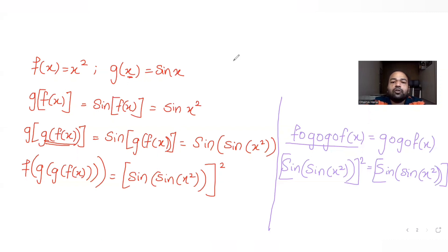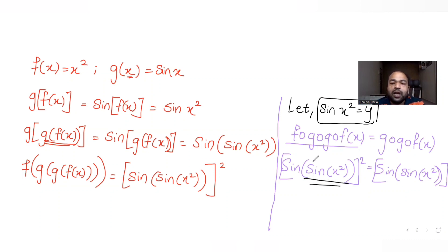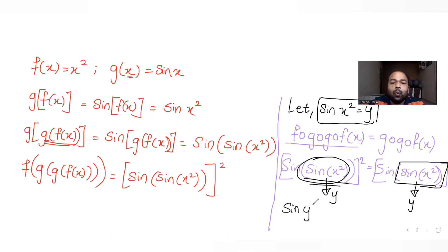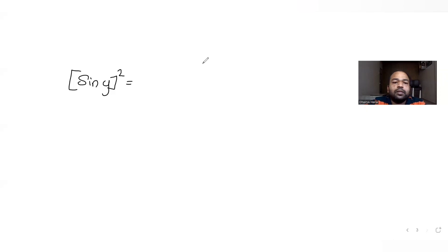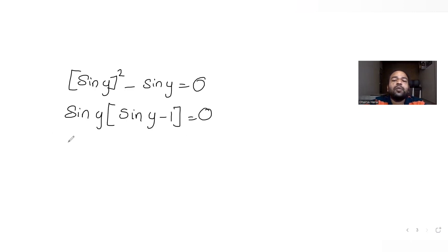To solve this more easily, let y = sin(x²). The equation becomes (sin(y))² = sin(y). Taking everything to one side: sin²(y) − sin(y) = 0. Factoring out sin(y): sin(y)(sin(y) − 1) = 0. So either sin(y) = 0 or sin(y) = 1.